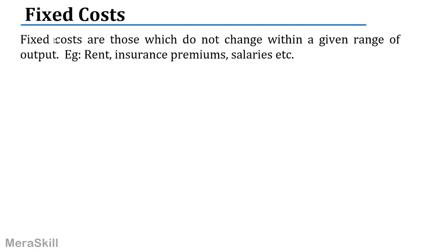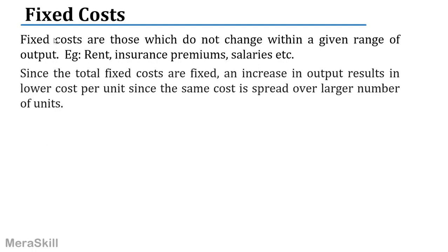Rent would be a fixed cost. We don't expect that if I make one unit I pay $1, or if I make 50 units I pay $50. It's not like that. Maybe I pay $10,000 a month or $1,000 a month — that amount is fixed irrespective of the volume of output. Since total fixed costs are fixed, an increase in output results in a lower cost per unit, since the same cost is spread over a larger number of units.